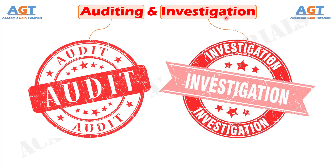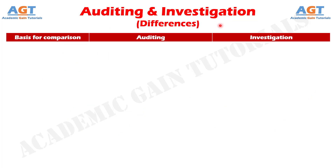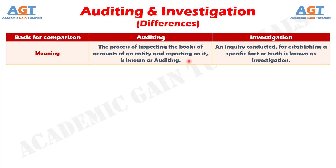Let's look into the basic differences between auditing and investigation in a tabular form. Difference number one: the process of inspecting the books of accounts of an entity and reporting on it is known as auditing, whereas an inquiry conducted for establishing a specific fact or truth is known as investigation.